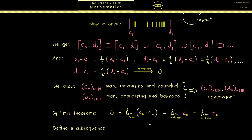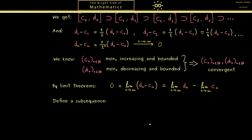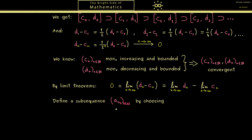Therefore finally we are able to define a subsequence for our original sequence an. We simply do that by choosing for ank one of the infinitely many elements inside one of the intervals.